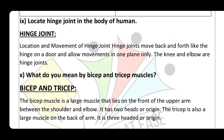Question: locate the hinge joint in the human body. A hinge joint moves back and forth like the hinge on a door and allows movement in one plane. The knee and elbow are hinge joints.